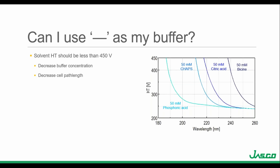One of the most common questions I get is: can I use my buffer as a blank? The best way to check is to run a measurement of the buffer in the wavelength range you want. Since we want the buffer to contribute very little to the overall absorbance, the solvent HT voltage should ideally be less than 450 volts — any larger and the addition of the sample will likely surpass that 700 volt threshold. The figure on the right illustrates different solvents and their wavelength limitations. If I wanted to go below 200 nanometers, my only option is a 50 millimolar phosphoric acid buffer.